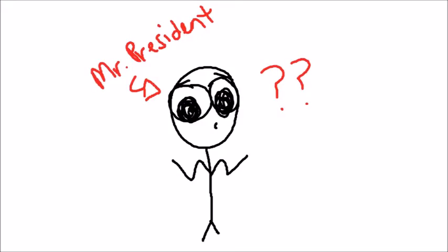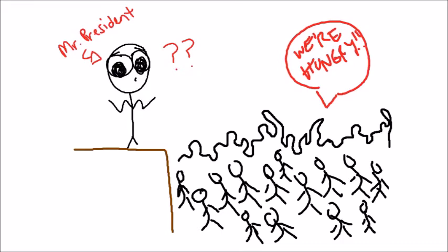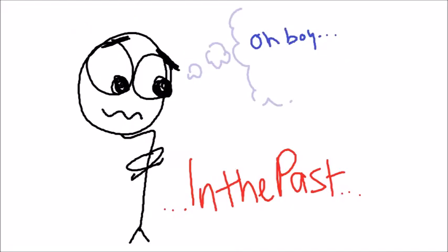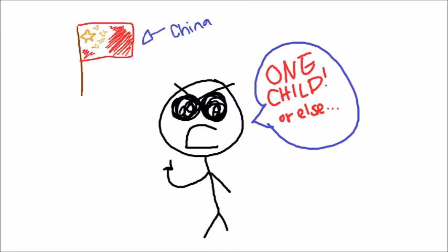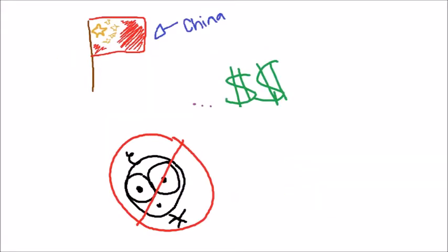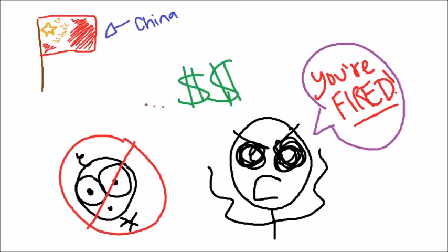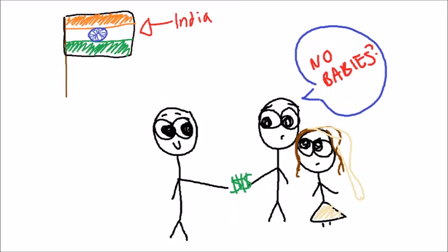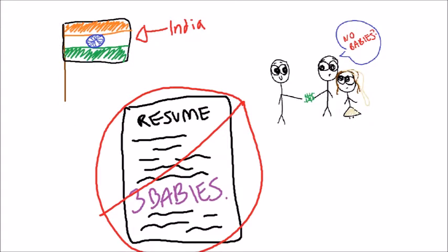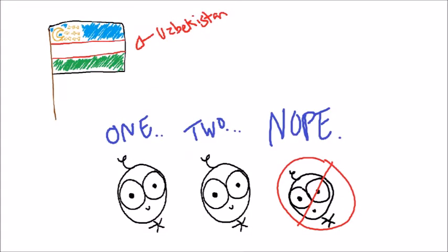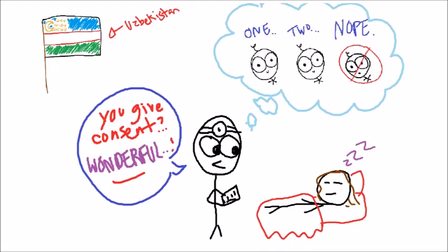But what can governments do with population sizes increasing beyond sustainability? In the past, we've tried enforcing one-child policies in which violators faced heavy fines, forced sterilizations or abortions, or loss of jobs and benefits. We've tried bribing newlyweds to wait a few years before having kids, and disqualified people that had more than two children from holding public office.